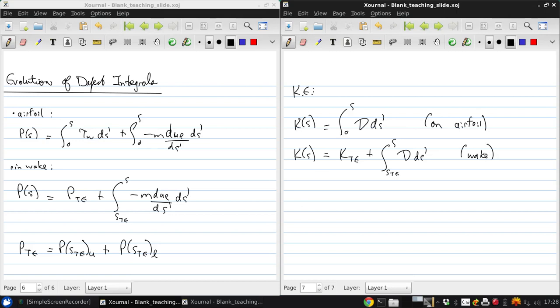So one thing that's very interesting to note is that k of s does not directly depend on the pressure gradient, unlike the momentum defect, which does through the mass defect term and the streamwise variation of u e.